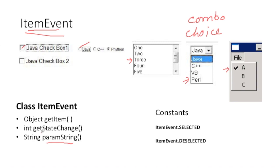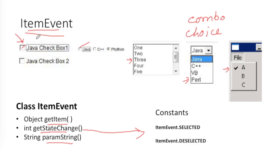Another method is getStateChange(), which returns the change in state — whether the item got selected or deselected. It returns one of two predefined constants from the class: SELECTED or DESELECTED. One more method is getItem(), which returns a reference to the object on which the event was generated. It returns an Object type because it could be a checkbox, radio button, list item, or menu item.